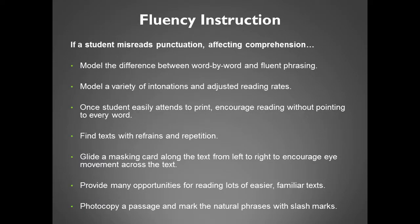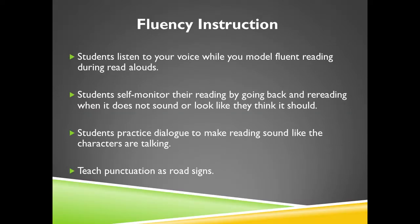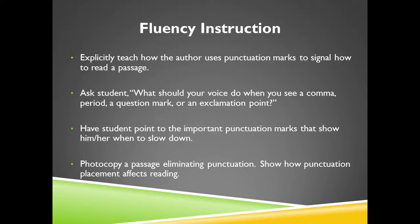If a student misreads punctuation affecting comprehension, model the difference between word-by-word and fluent phrasing. Model a variety of intonations and adjusted reading rates. Once a student easily attends to print, encourage reading without pointing to every word. Find text with refrains and repetition. Glide a masking card along the text from left to right to encourage eye movement across the text. Provide many opportunities for reading lots of easier, familiar texts. Photocopy a passage and mark the natural phrases with slash marks. Students can listen to your voice while you model fluent reading during read-alouds.